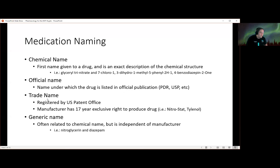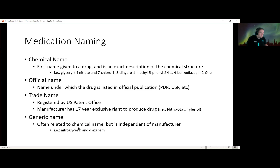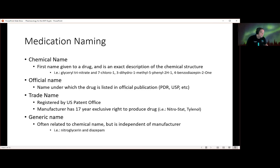The two names we're most familiar with are trade names and generic names. Trade names are names like Narcan and Tylenol. Generic names — like nitroglycerin and diazepam — are specific to the type of chemical but independent from the manufacturer. A trade name is a registered patent, and the company has 17 years of exclusive rights to produce the drug. This allows the drug company that spent sometimes billions of dollars researching a drug to recoup their investment, after which it becomes generic.